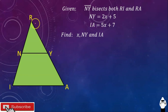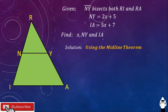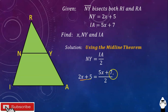Let's have another example: triangle RIA with mid-segment, or midline, NY. Given that segment NY bisects both RI and RA — in short, N is the midpoint of RI and Y is the midpoint of RA — NY is equal to 2X plus 5, and IA is equal to 5X plus 7. Find X, find NY, and find IA. Using the midline theorem, NY is equal to IA over 2. Substituting the values, we have 2X plus 5 is equal to 5X plus 7 all over 2.